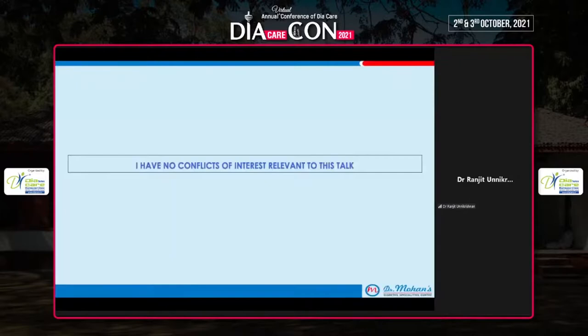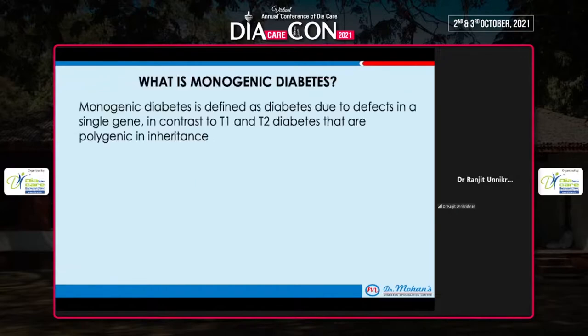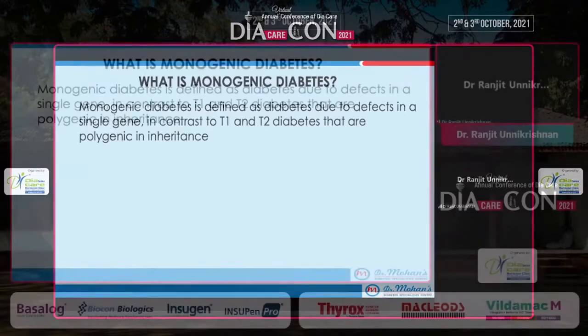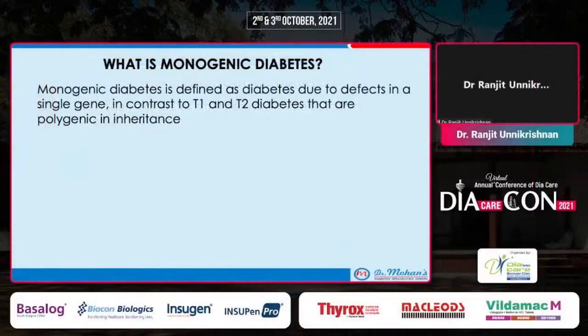I have no specific conflicts of interest to this particular talk. Monogenic diabetes is diabetes due to a defect or mutation in a single gene.